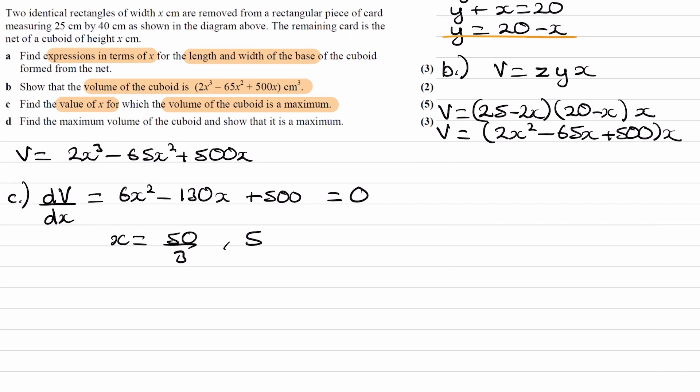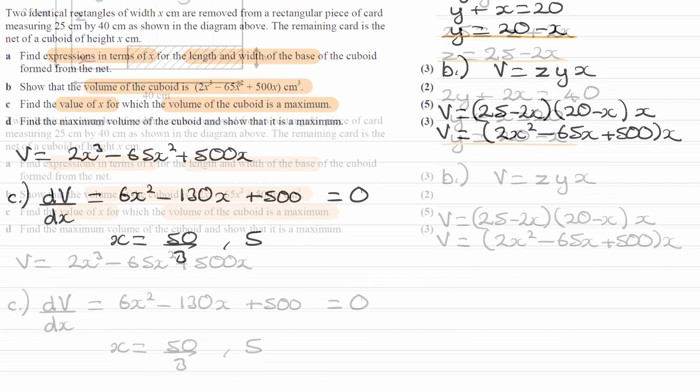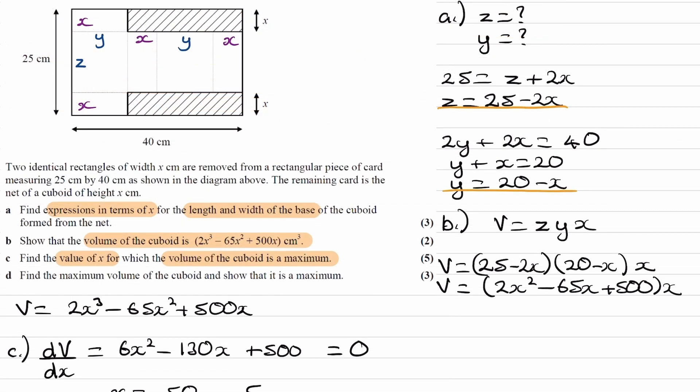So we need to figure out which of these two things is going to correspond to our volume being a maximum. In the second part, in part D, we're going to be verifying that it is a maximum. So we could do part D now, and that will tell us which value of x will give us a maximum. But another way is to think about the lengths that we have in our shape and the two lengths for x that we have here, and then think about whether either of these lengths wouldn't be possible. So all of our lengths have to be positive.